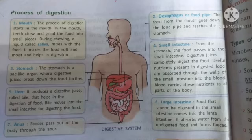Blood carries these nutrients to all parts of the body. Fifth is the liver. The liver produces a digestive juice called bile that helps in the digestion of food. Bile moves into the small intestine for digesting the food.